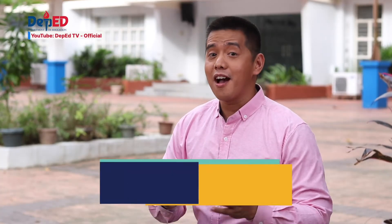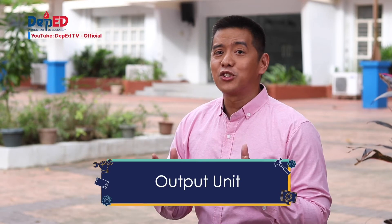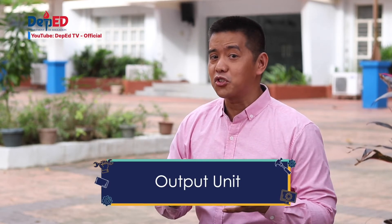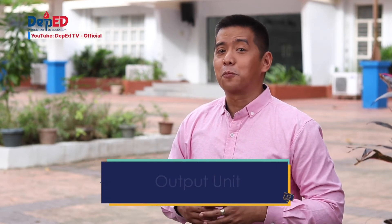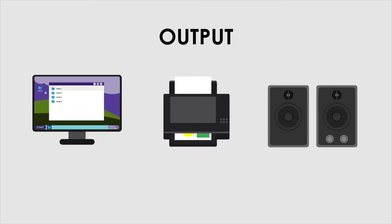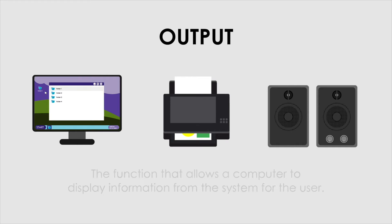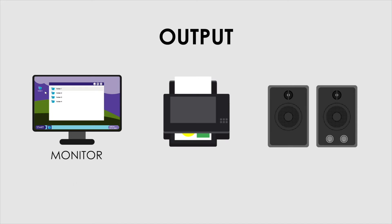And lastly, we have the output unit. This is the process of producing useful information or results for the user, such as a printed report or a visual display. It is the display or output of results after it has been processed. The output is the exact opposite of the input — it is the function that allows a computer to display information from the system for the user. This can be accomplished through the monitor, printer, and speakers.